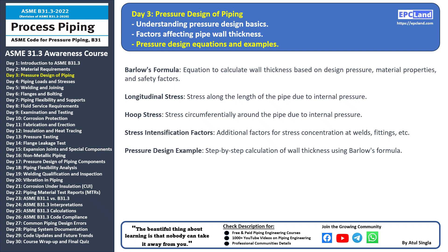To illustrate these concepts, let's walk through a pressure design example using Barlow's formula to calculate the required wall thickness for a specific piping system. Following the steps, you'll gain a better understanding of how pressure design equations are applied in practice. By using Barlow's formula and considering factors like longitudinal stress, hoop stress, and stress intensification factors, we've determined the required wall thickness for our piping system. This calculated thickness ensures that the system can safely handle the design pressure.